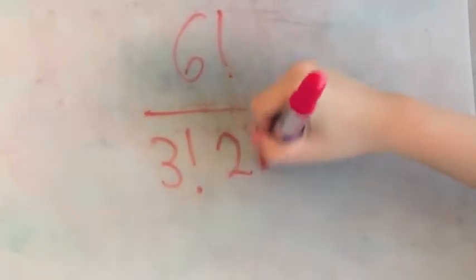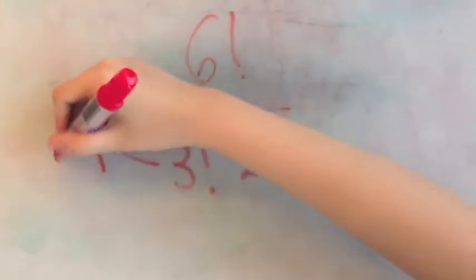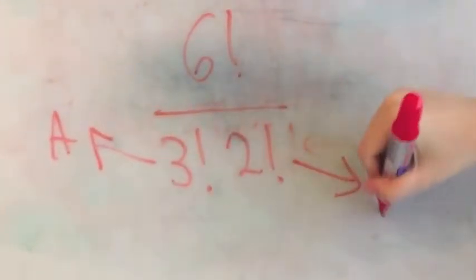So, you have to divide 6 factorial by 3 factorial and 2 factorial. 3 factorial for 3 repeated A's and 2 factorial for 2 repeated N's.